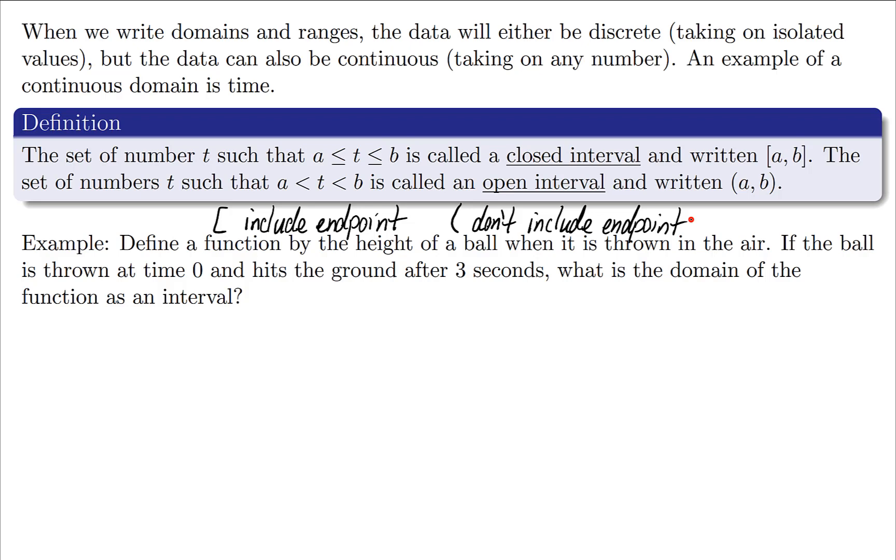Let's look at this example. You have a function for the height of a ball when it's thrown in the air. The ball is thrown at time zero and hits the ground after three seconds. What is the domain of this function? Well, the domain is all the values of your input. So your input in this case is time. It started at time zero and we'll include that endpoint, and then it ended at time three and we'll also include that endpoint.